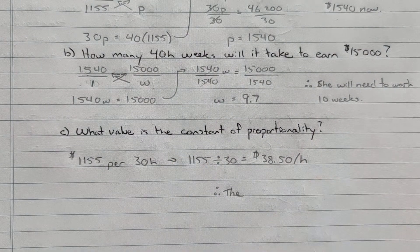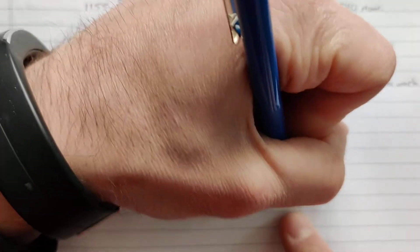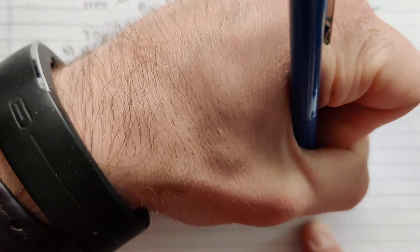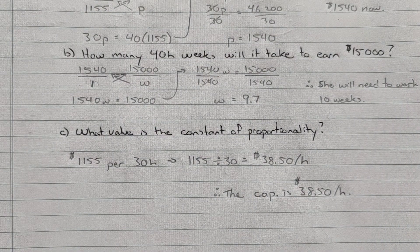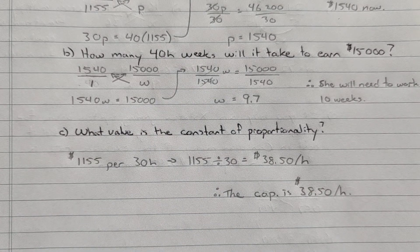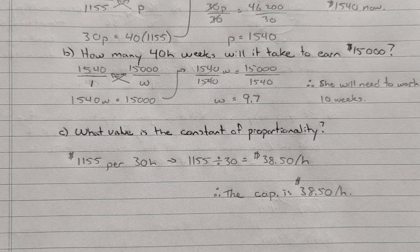And just to shorten this up, I'm going to actually say the COP is $38.50. So constant of proportionality. That's that constant value. So throughout all these questions, that's the one thing that stayed the same. She was always making that $38.50 in each situation.